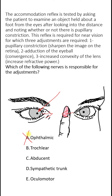The ophthalmic nerve is not responsible because it is only sensory and has no motor component. The trochlear nerve supplies only the superior oblique muscle, which moves the eyeball downwards and laterally, so it is not the trochlear nerve either. The abducent nerve causes abduction of the eye, moving it laterally, as it supplies the lateral rectus muscle.